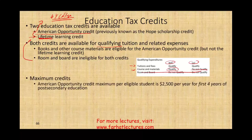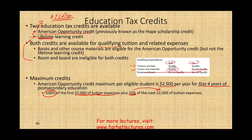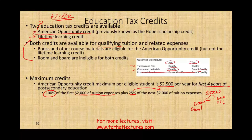The maximum credit for the American Opportunity Credit is $2,500 per eligible student per year for the first four years of post-secondary education. It's computed as follows: the first $2,000 of tuition is 100%, giving a $2,000 credit, and the next $1,000 is at 25%, giving $250. So if you spend $3,000 in expenses, your total credit will be $2,250.